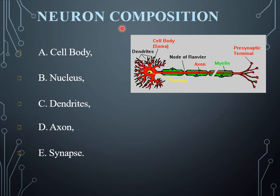A neuron cell is composed of different parts. One is the cell body region of the neuron. Second is the nucleus, which is the central part shown in yellow. Third are the dendrites, which are basically projection-like structures. There is also the axon and the synapses, where two neurons meet together.